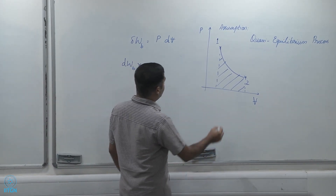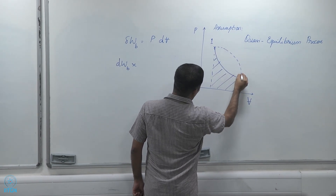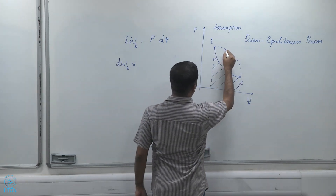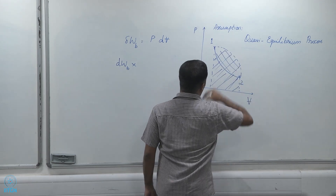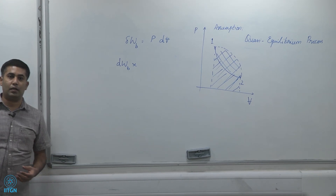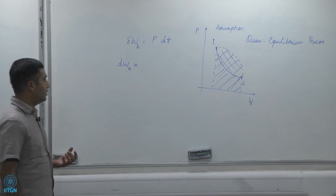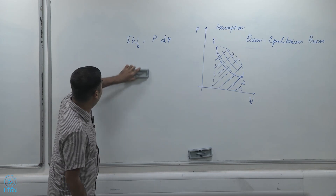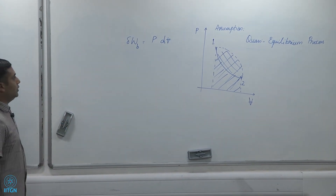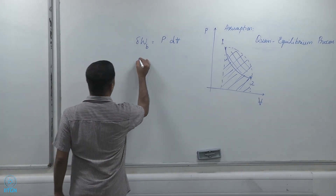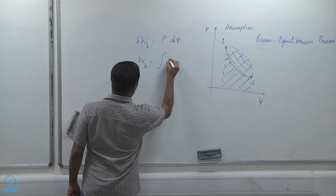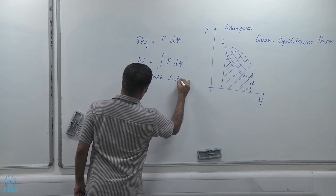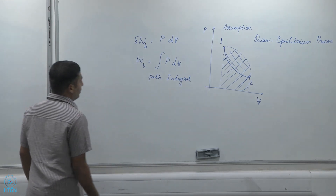Why? Because I could take any number of paths to go from 1 to 2, and if I took a different path, the area under the curve would be different. So I would have a different moving boundary work interaction. It is a path dependent process and that is why we write δW_B and not dW_B — it is an inexact differential. W_B is of course a path integral of P dV.